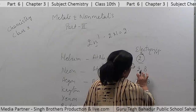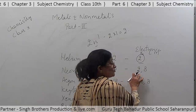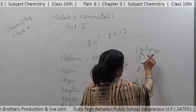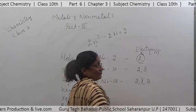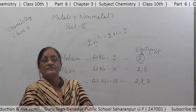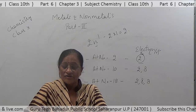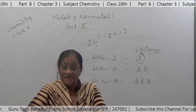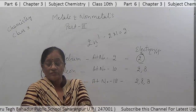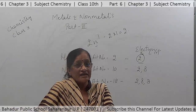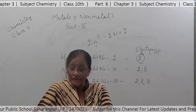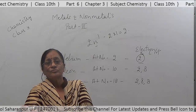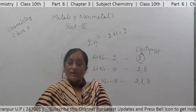The first orbit can have only two electrons, and the L orbit can have 8 electrons. Noble gases are stable and chemically inert because they have their completely filled outermost orbit.